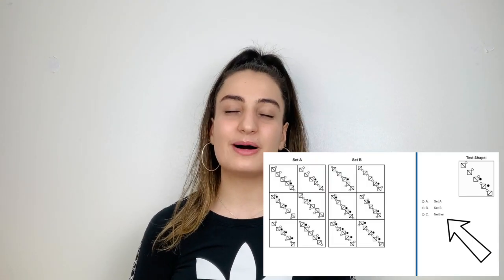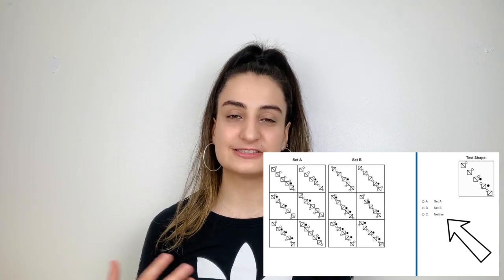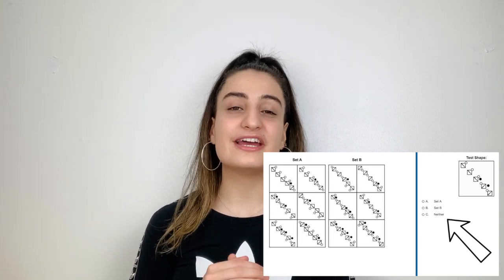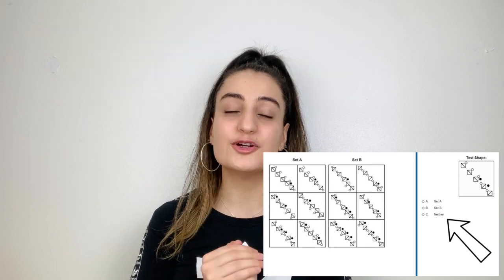For type 1 questions, don't be afraid to pick neither. I know it's quite unsettling when you don't press set A or set B, but if this is what your instinct is telling you, go with it. For type 2 questions, you are given a whiteboard — make use of it. You can use it to note down any similarities you see in the series to help you pick the next shape. And for type 4 questions, the UCAT app was very useful, so I definitely recommend you go check it out.